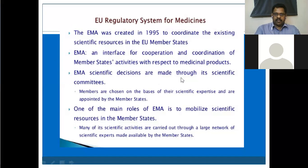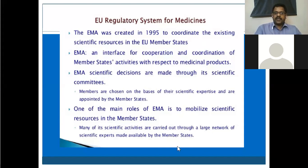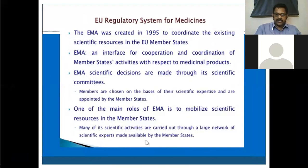EMA's scientific decisions are made through its scientific committees. Many committees exist under EMA, and their members are chosen based on scientific expertise and appointed by the member states — each member state contributes members to the committees. One of the main roles of EMA is to mobilize scientific resources in the member states, with many scientific activities carried out through a large network of scientific experts made available by the member states.